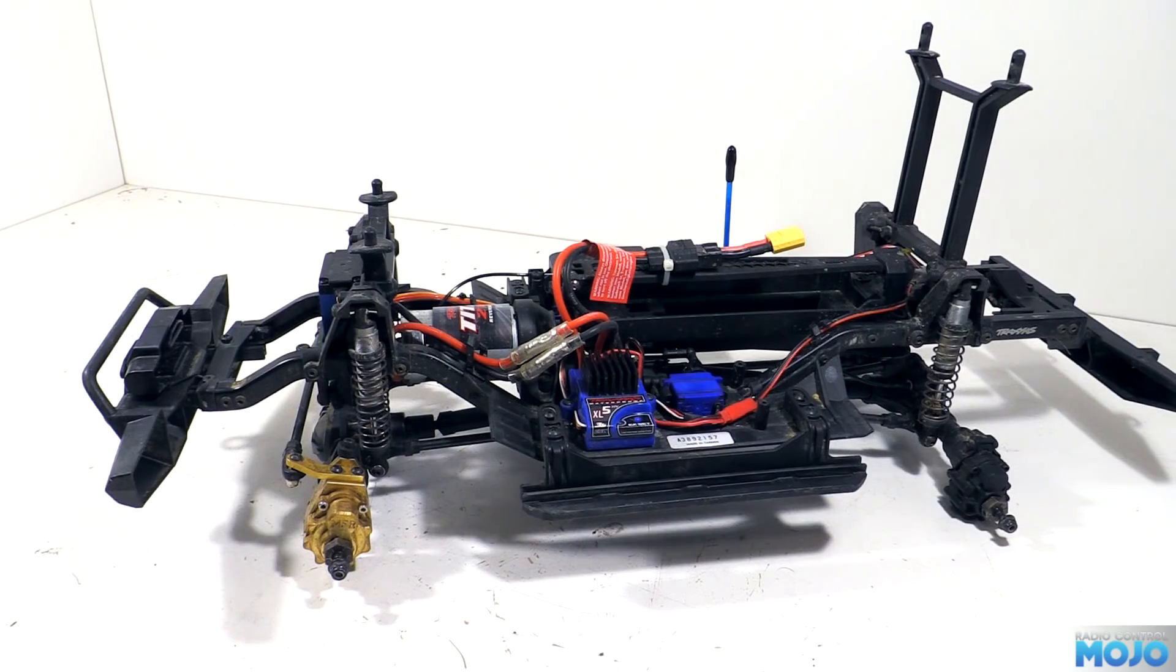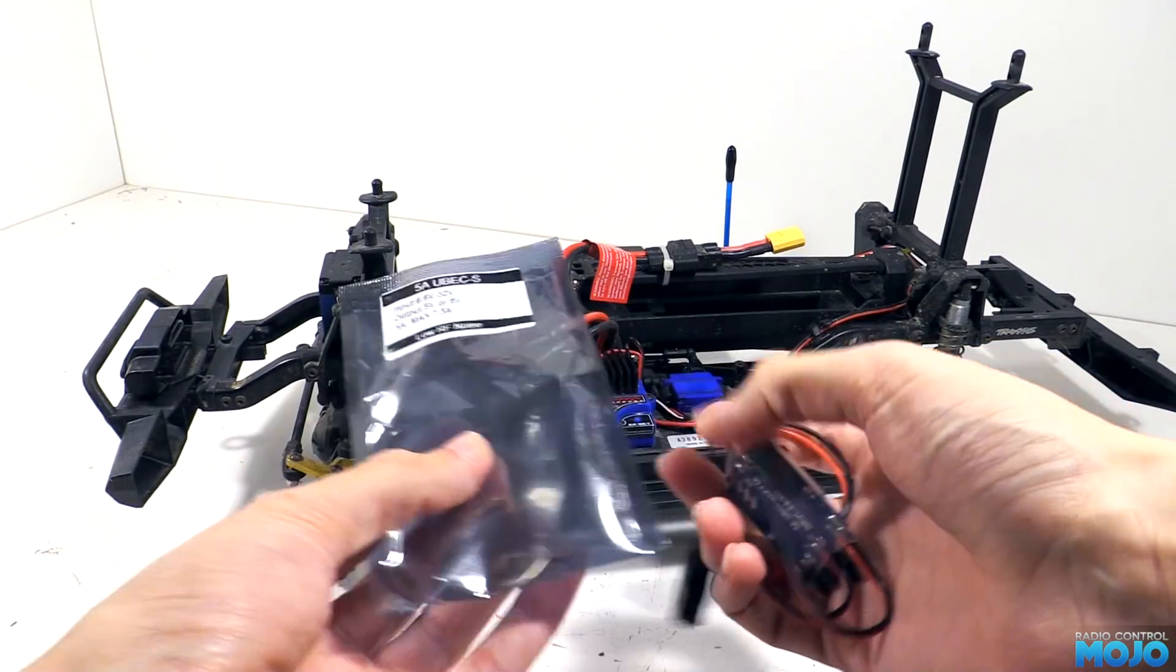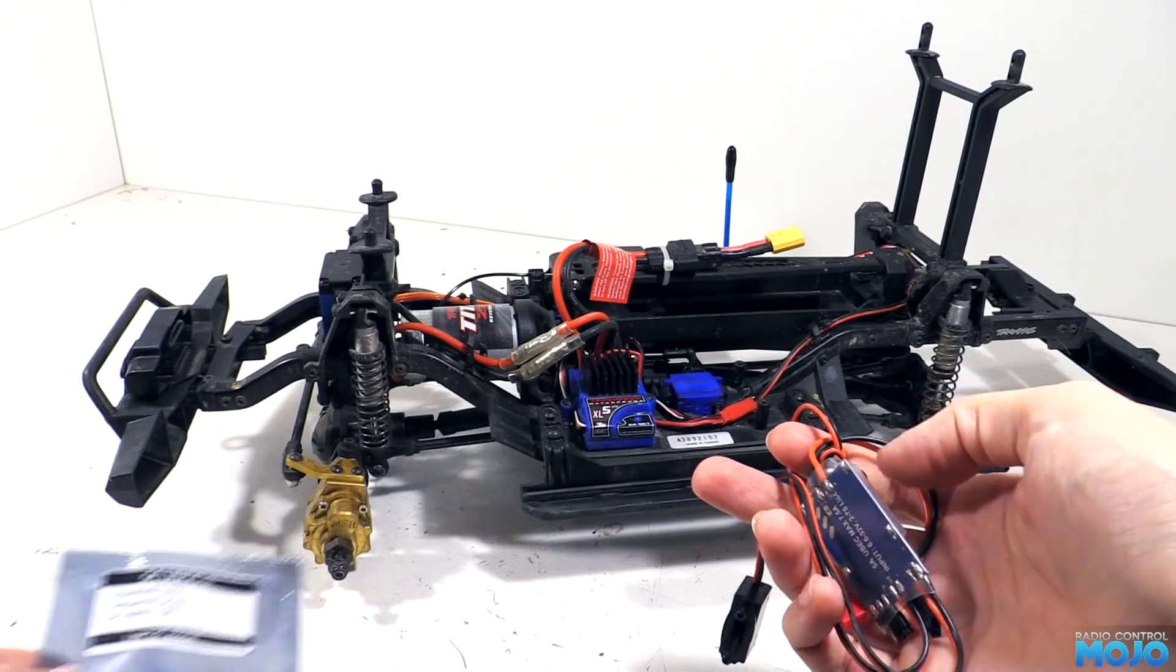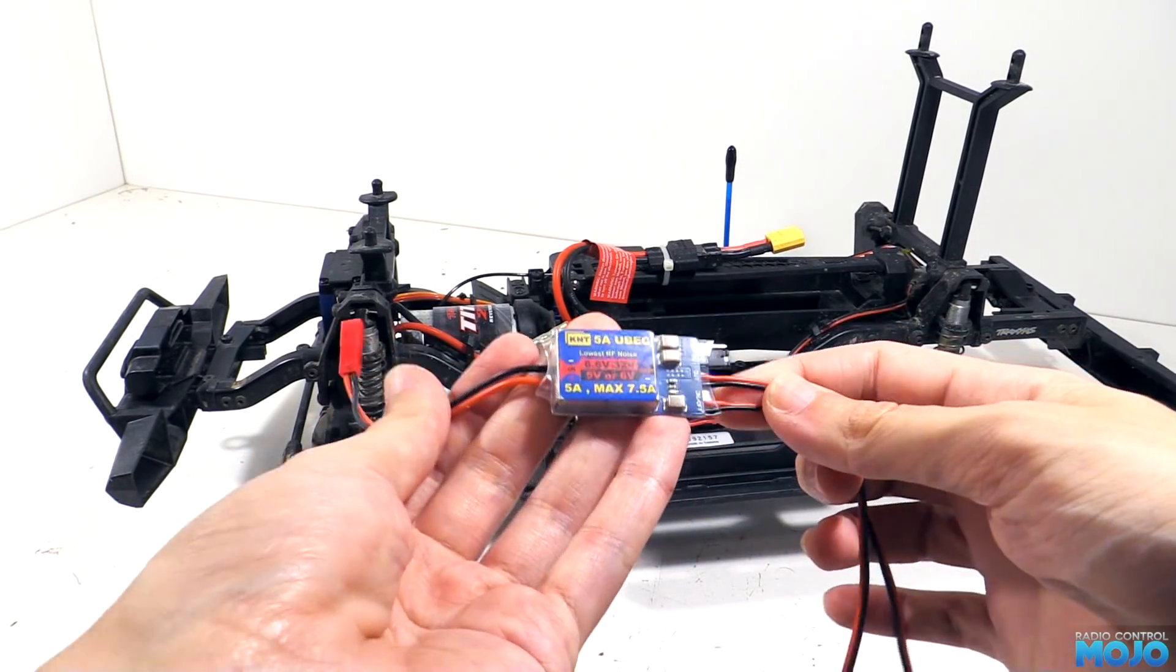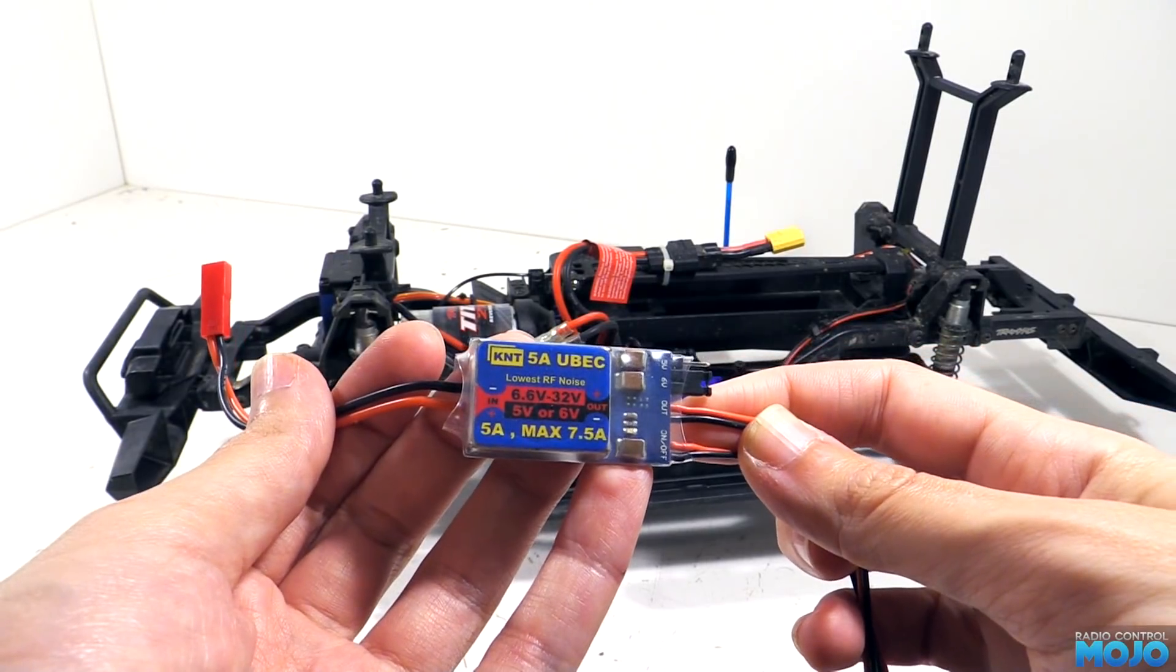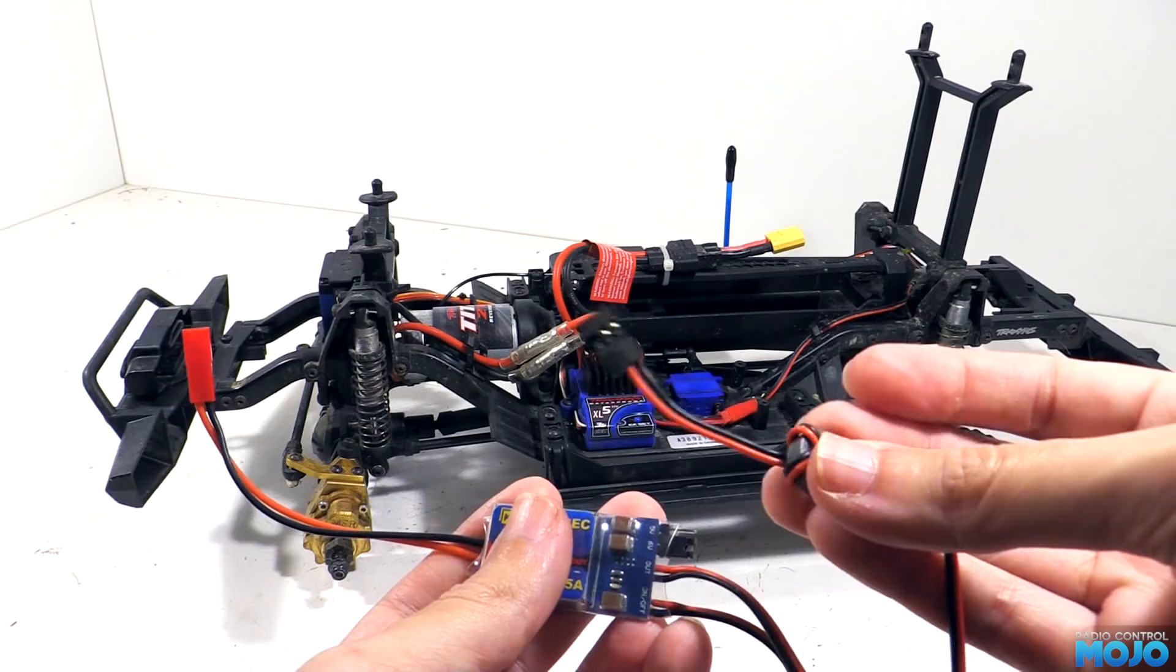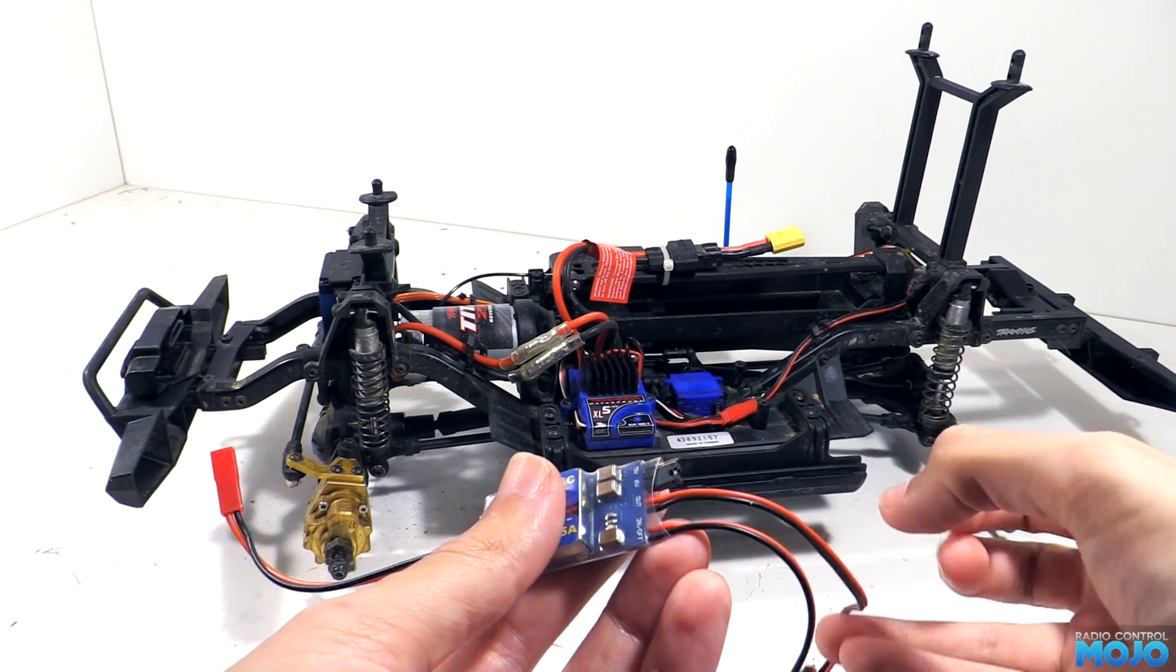While browsing around, looking at other BECs, I found this one. It's a KNT 5A with switch, sold here in the UK by Component Shop. Other than the extra pair of wires for the switch, it's exactly the same as the Hobbywing. We've got the input side, this time with the BEC connector, rather than just the bare wires. And at the other end, we've got the servo connector that we connect up to the receiver in the basic install.